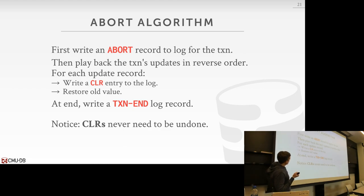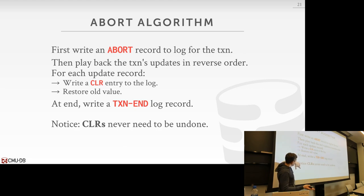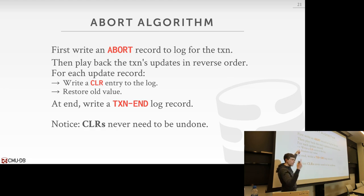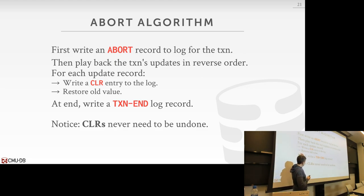For our abort algorithm: we're going to write an abort record to the log for every transaction, then we're going to play back the transaction updates in reverse order, and for everything we're going to reverse, we add a CLR entry to the log that's tied to the original update that occurred during normal operation — and then we store the original value. Once we complete all these CLRs and we've done all we need to do for this transaction, then we can add the transaction end message.